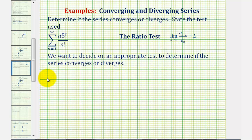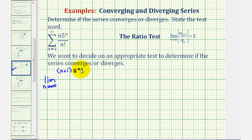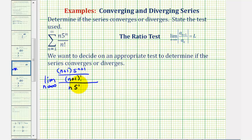Let's go ahead and set up our limit. We'll have the limit as n approaches infinity of a sub n plus one. So we'll substitute n plus one for n: we'll have n plus one times five to the power of n plus one, divided by n plus one factorial. That's a sub n plus one, divided by a sub n, which is just n times five to the n, divided by n factorial.